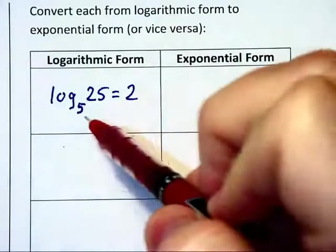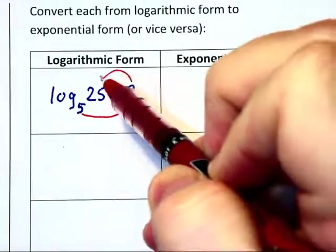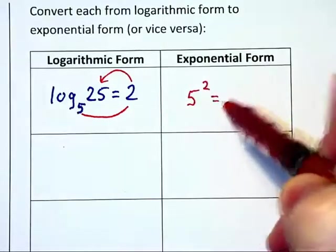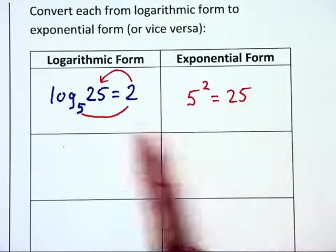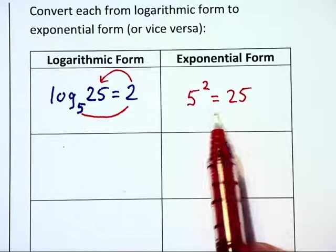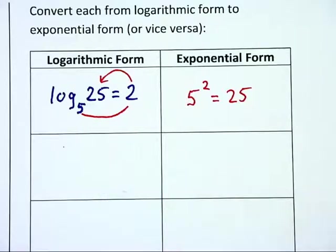There's a relationship here that says 5 the base to the second power over there is equal to 25. 5 squared is equal to 25. Those are the same equation. The one on the right is what we're used to looking at, exponential form, but what we have on the left is a logarithmic form of the same equation.